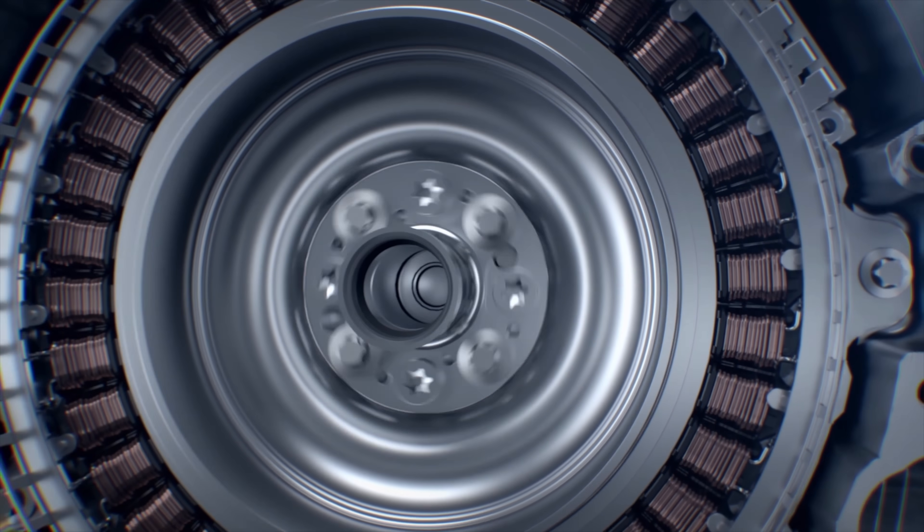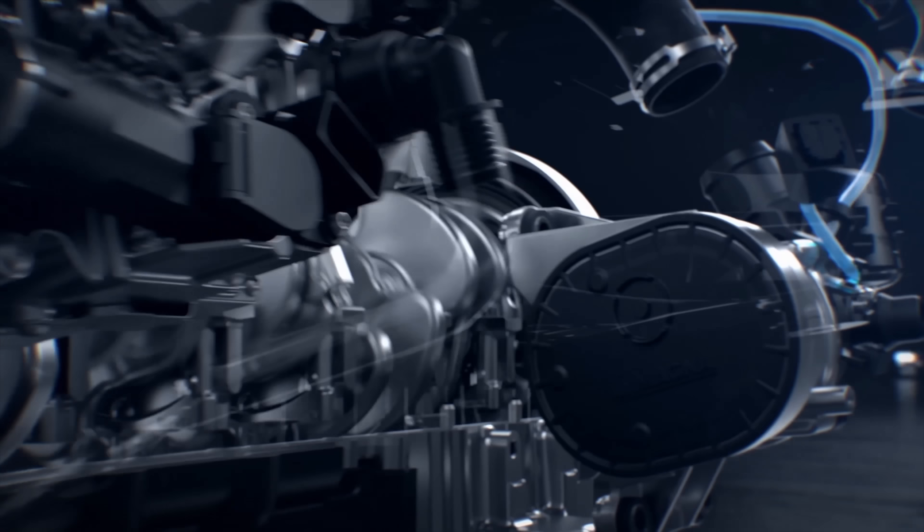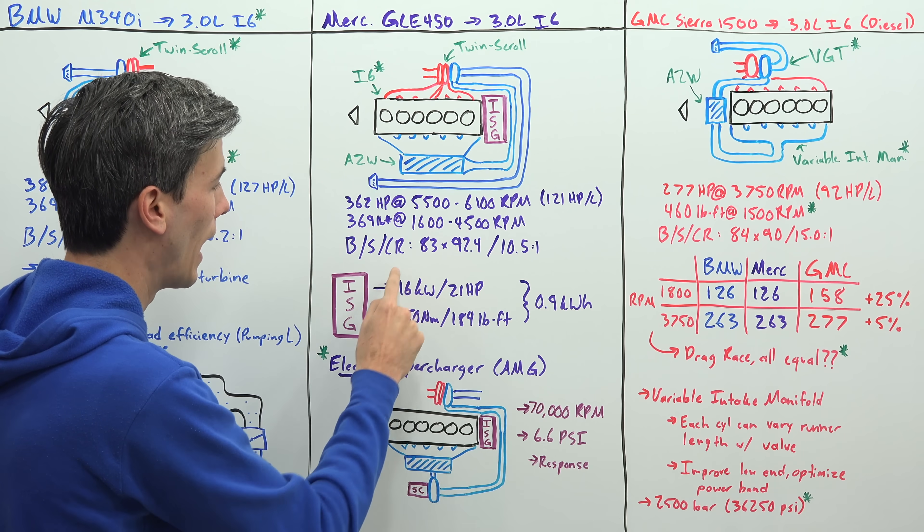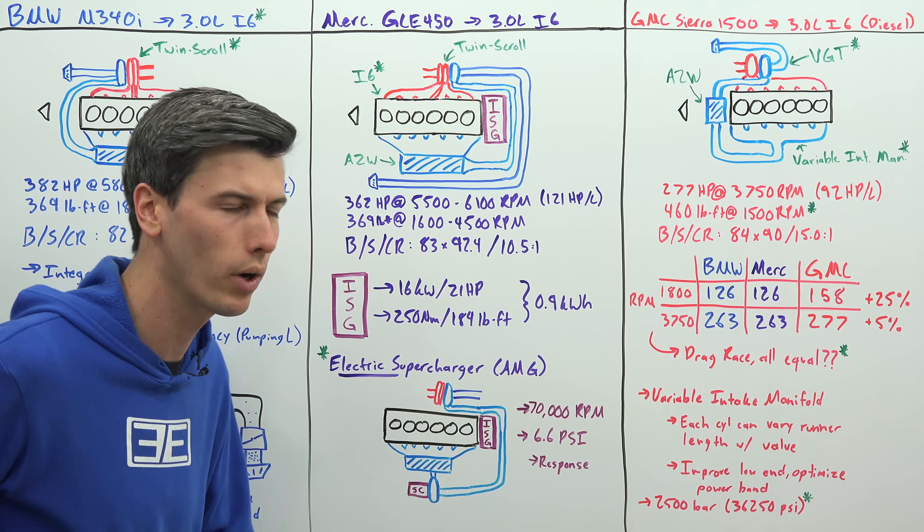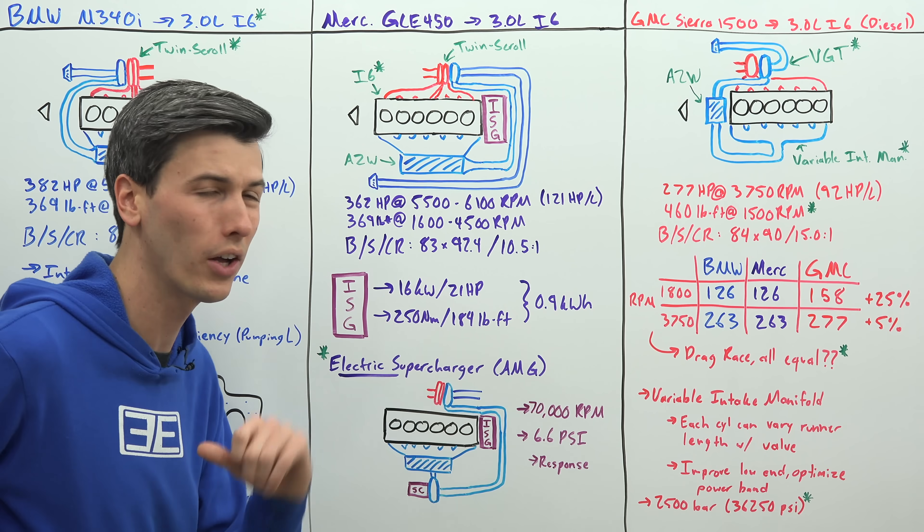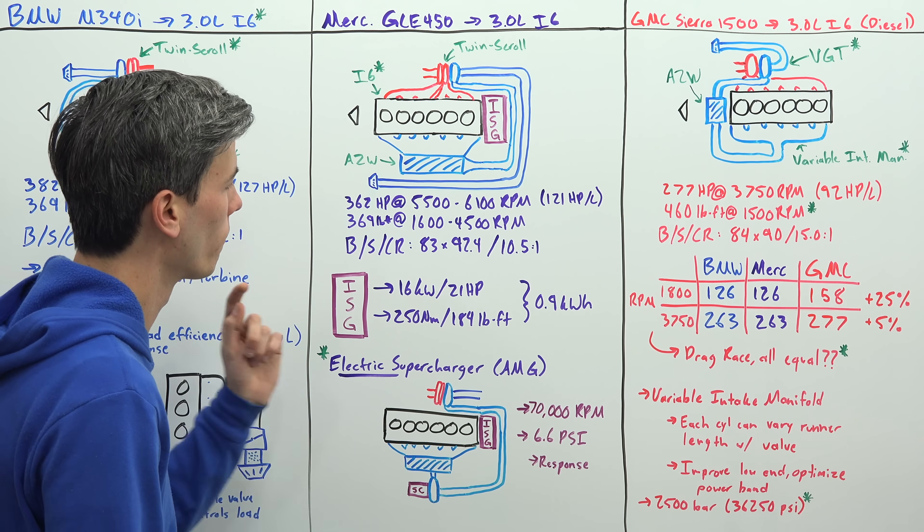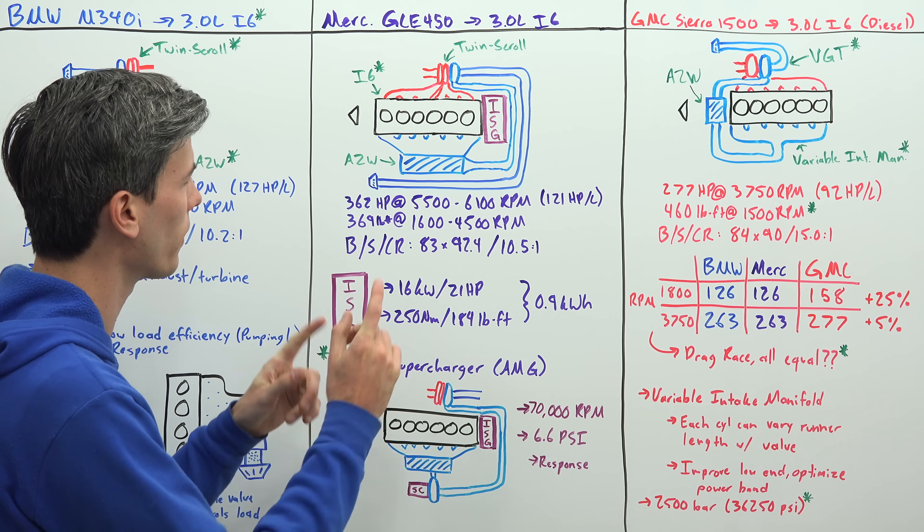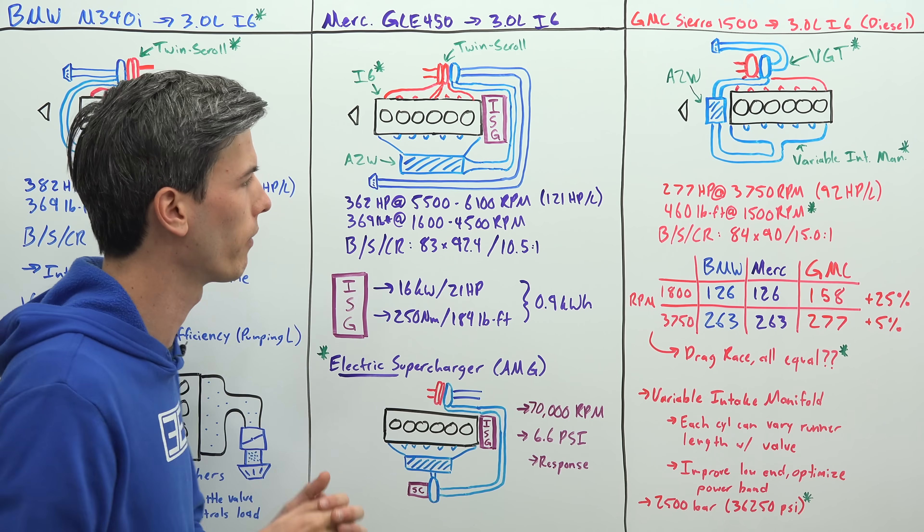The Mercedes on the other hand gets its efficiency from pairing with an electric system. By using a hybrid, this integrated starter generator right here actually can produce an additional 21 horsepower and 250 newton meters or 184 pound-feet of torque for very short boosts. Of course that higher torque is going to be at lower speeds, but very cool that it can kind of help fill the gap of the turbocharger, also improve efficiency and add a little bit of power using that electric motor connected right there on the end of the engine.